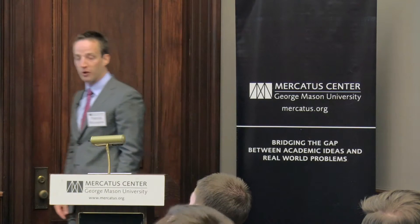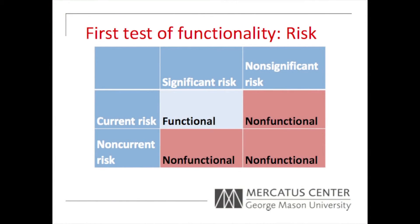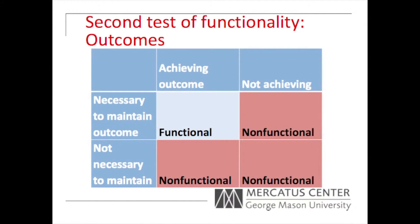The other part of this test is to look at whether the risk that the rule is trying to address is current. This goes to the fact that risks change perpetually. What was a risk 50 years ago may not be a risk now, and so rules can become obsolete because they were designed to address what was a current risk but the risk is no longer current. So the second question is: is the risk, if there was a real risk being addressed, still current? If the answer to either of those is no, then you have a non-functional rule.